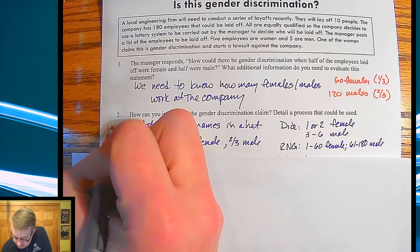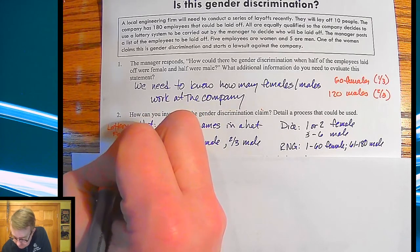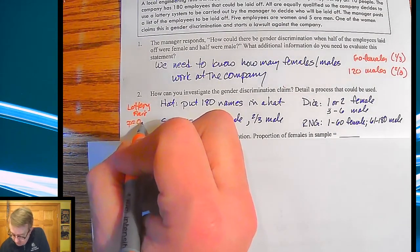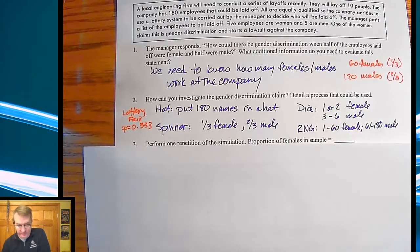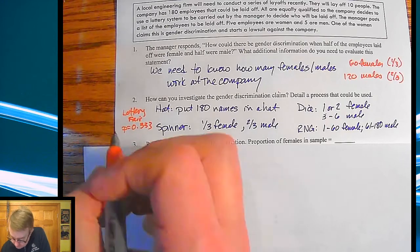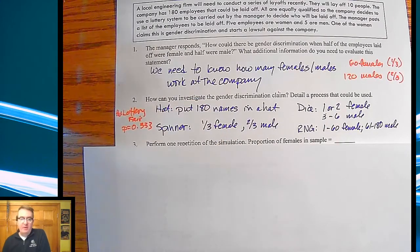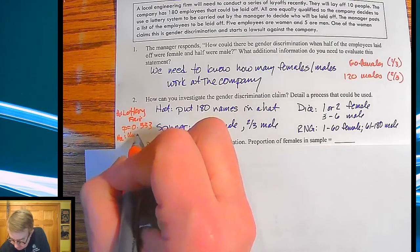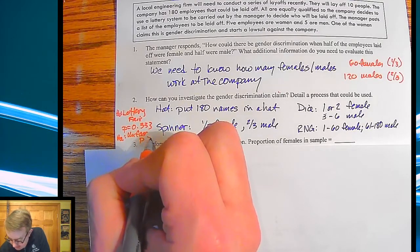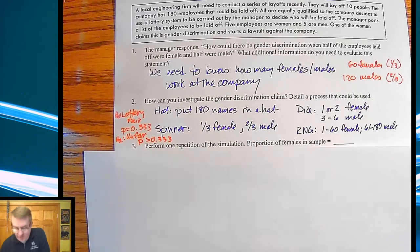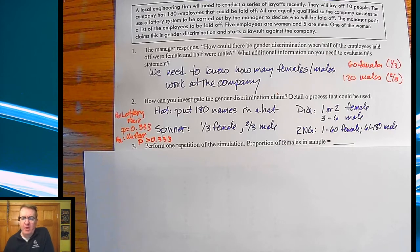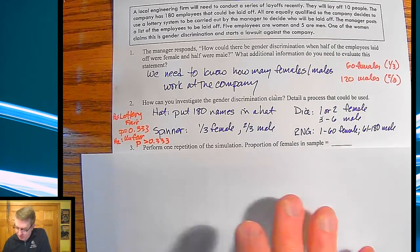Now, if the lottery was fair, what would we see? We should see a P value equal to one third, right? And that's going to be our null hypothesis. Our alternative hypothesis would be that it's unfair, and we'll see P being bigger than one third. So however you want to do this, and my students usually end up saying, let's use a calculator or dice. They like dice too.